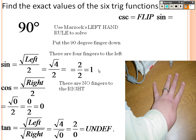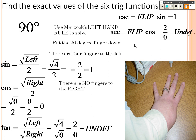Flipping the reciprocals: when you flip sine you get cosecant as 1. When you flip cosine you get secant as 2 over 0, which is undefined. And cotangent — instead of 2 over 0, it's 0 over 2, which is 0.